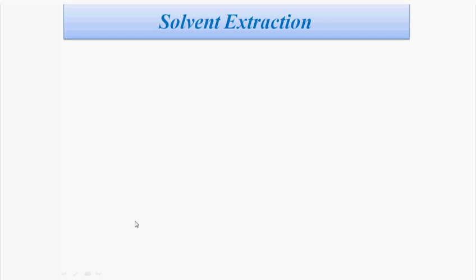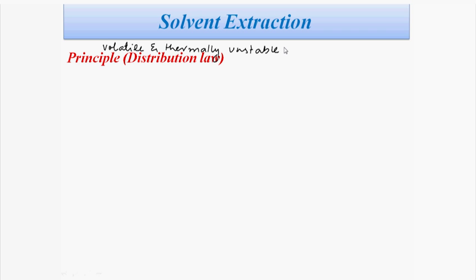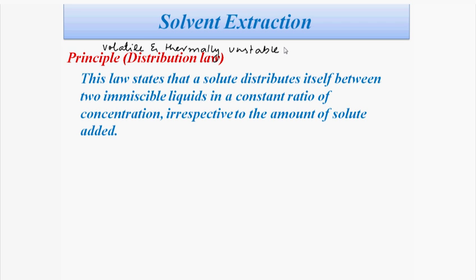Coming to an important topic of chapter number 2: solvent extraction. We do solvent extraction when our solute is volatile and thermally unstable. Basically, solvent extraction is a separation technique. It is based on a principle called the distribution law, also called the partition law. This law states that a solute distributes itself between two immiscible liquids in a constant ratio of concentration, irrespective of the amount of solute added.